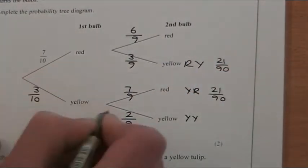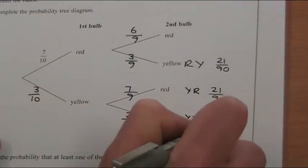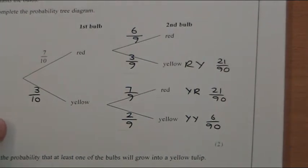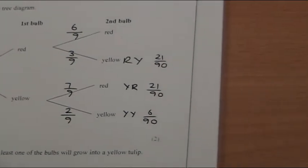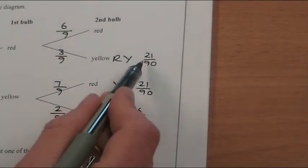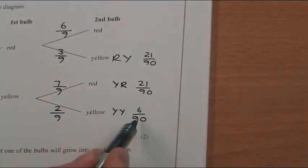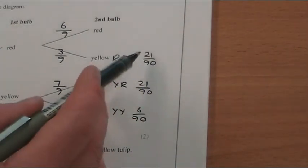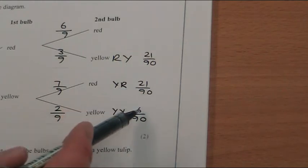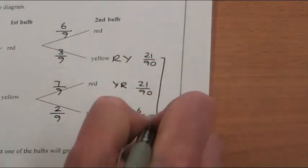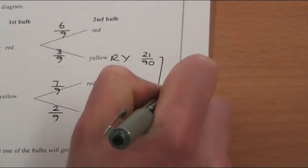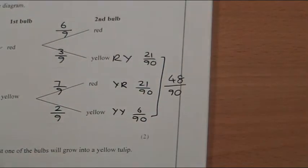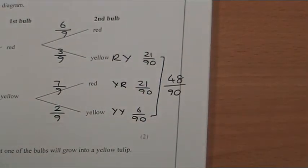So that is 21 over 90, that one is 21 over 90, and this one is 6 over 90. So there are three ways which we can get at least one being yellow: that way or that way or that way. And if you combine these together, you get 42 plus 6 is 48, so it's a 48 out of 90 chance that at least one of your tulips will grow to be yellow.